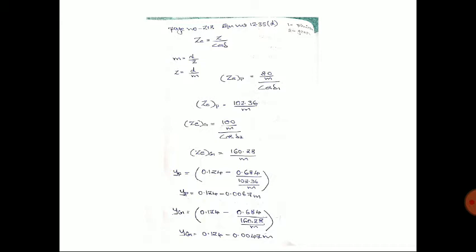The equivalent number of teeth is: Zd = Z / cos δ. We also know module m = d / Z, so Z = d / m. Therefore, for the pinion: Zdp = (d1 / m) / cos δ1 = 80 / (m · cos δ1) = 102.36 / m. Similarly, for the gear: Zdg = 100 / (m · cos δ2) = 160.28 / m. The equivalent number of teeth for pinion and gear are expressed in terms of module m.